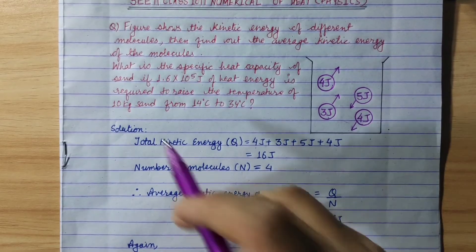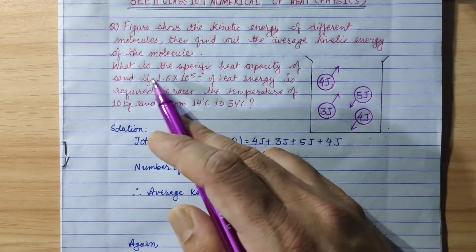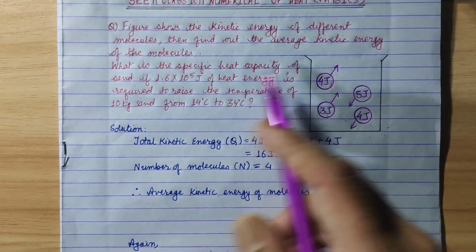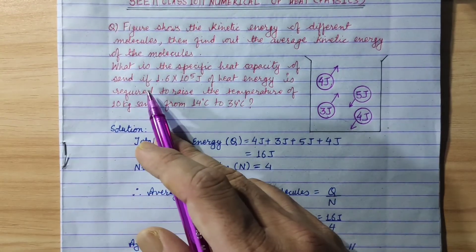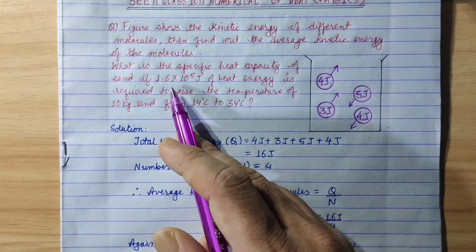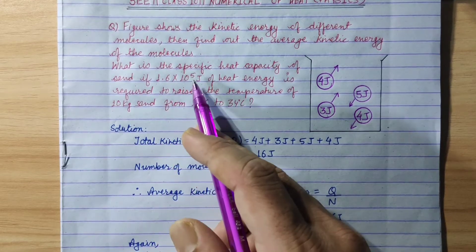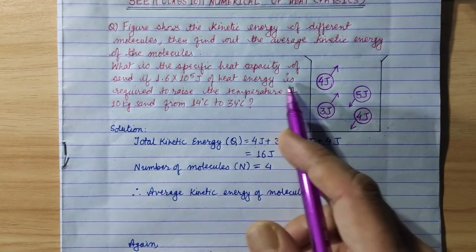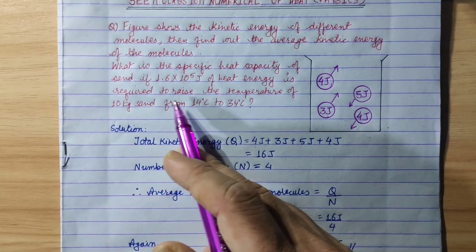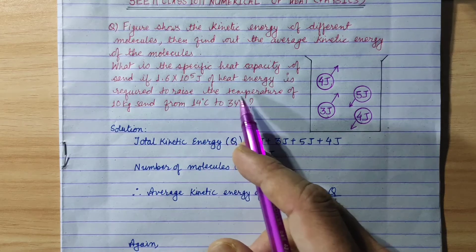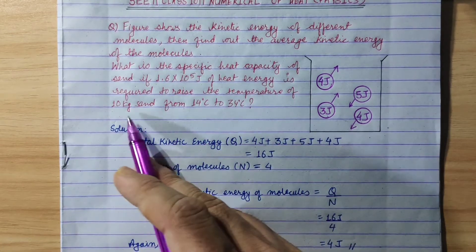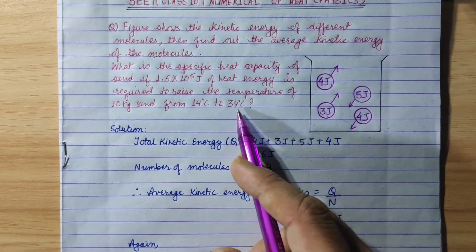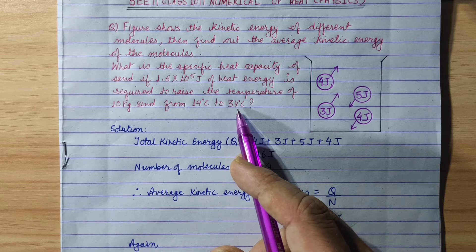Second part. What is the specific heat capacity of sand if 1.6 into 10 to the power 5 joules of heat energy is required to raise the temperature of 10 kg sand from 14 degree Celsius to 34 degree Celsius?